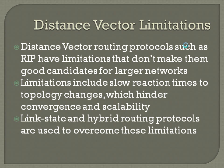We talked about previously distance vector routing protocols. We're talking about these other protocols now because of the limitations that distance vector has. RIP in particular is not a good candidate for larger networks because it uses a single metric of hop count, and the maximum hop count on RIP is 15, so you can't go beyond 15 hops. It's also got slow reaction times to topology changes, which can hinder convergence and scalability.